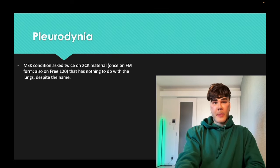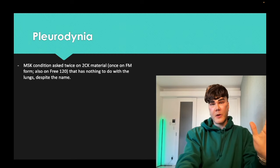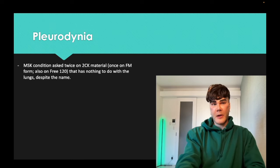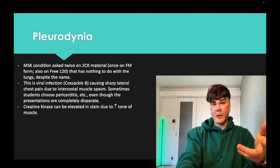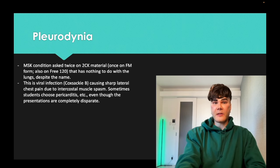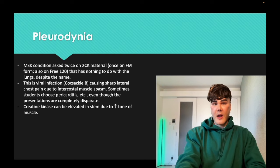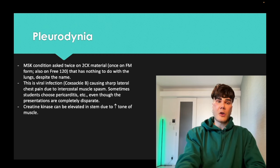Pleurodynia is intercostal muscle spasm due to a viral infection — usually Coxsackie B virus — presenting as sharp lateral chest pain. Despite the name, it has nothing to do with the lungs; it's an MSK diagnosis. Creatine kinase is typically elevated due to increased muscle tone from the spasm. It's been asked twice on the 2CK NBMEs.